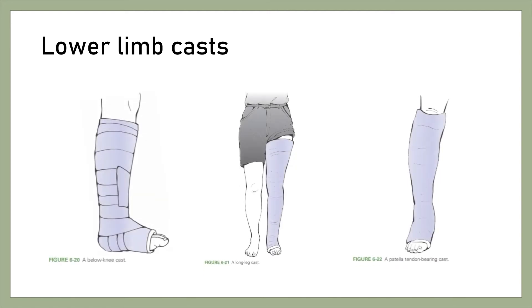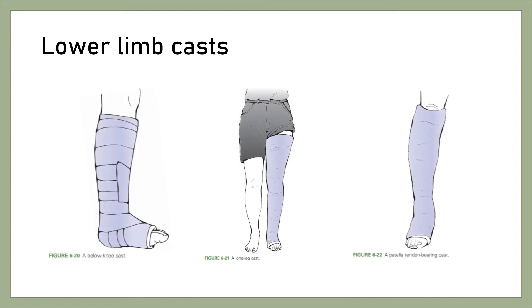These are pictures of lower limb casts: the first is a below-knee cast, the second is a long leg cast, and the last is a patellar tendon bearing cast.